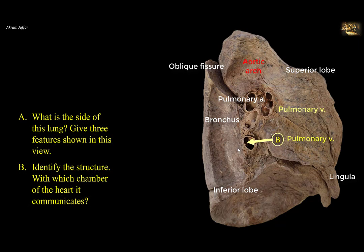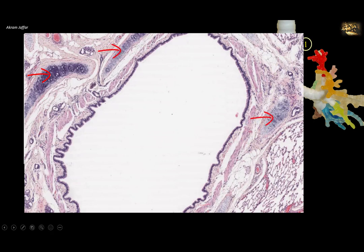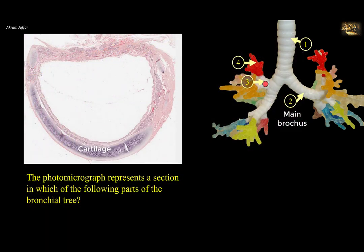The photomicrograph represents a section in which of the following parts of the bronchial tree? The section clearly shows the presence of a hyaline cartilage in the form of a C-shaped hyaline cartilage, with no cartilages posteriorly. Cartilage plates around the circumference of the bronchial tree is a feature of a bronchus, whether a main bronchus, a lobar bronchus, or a segmental bronchus.